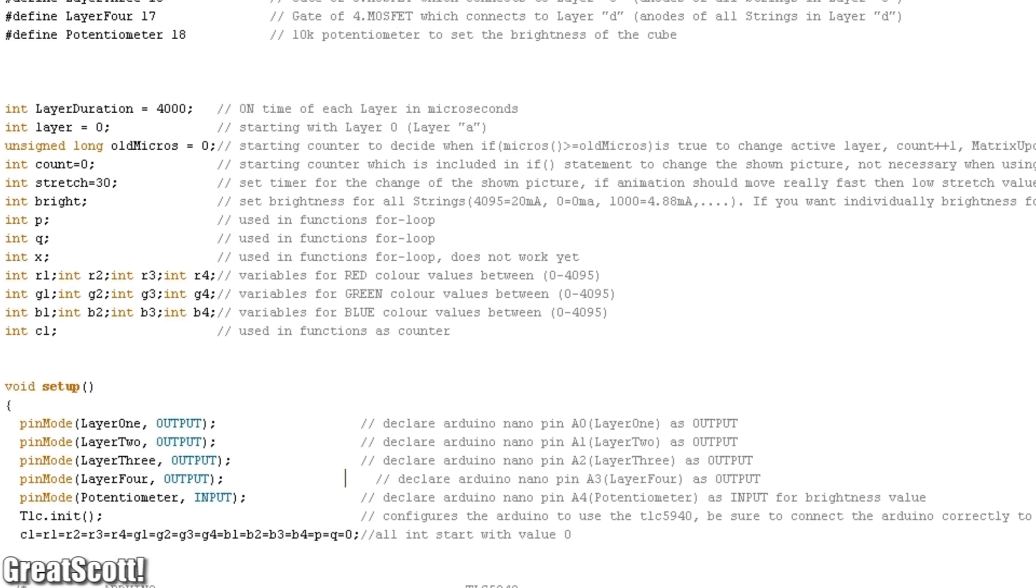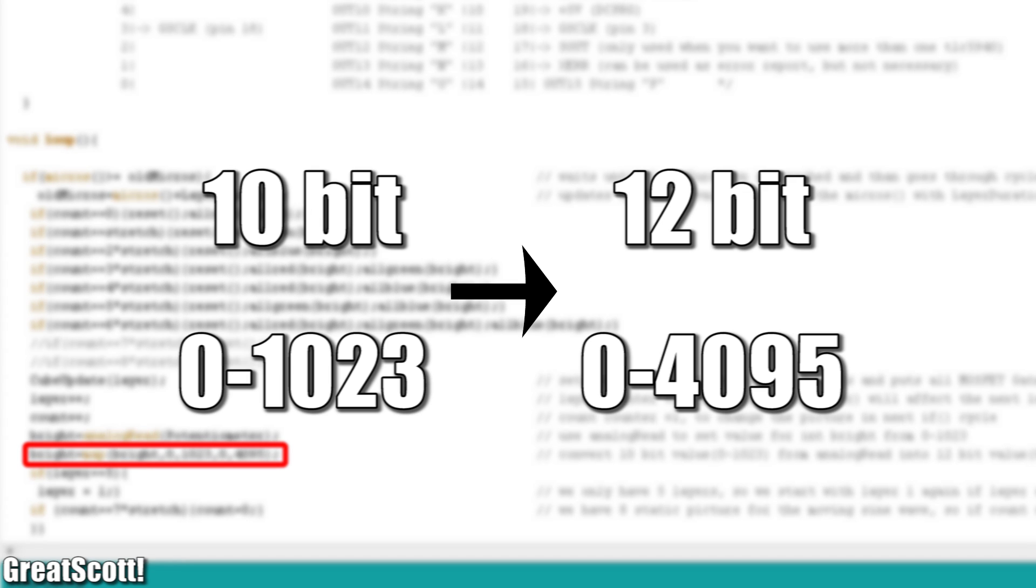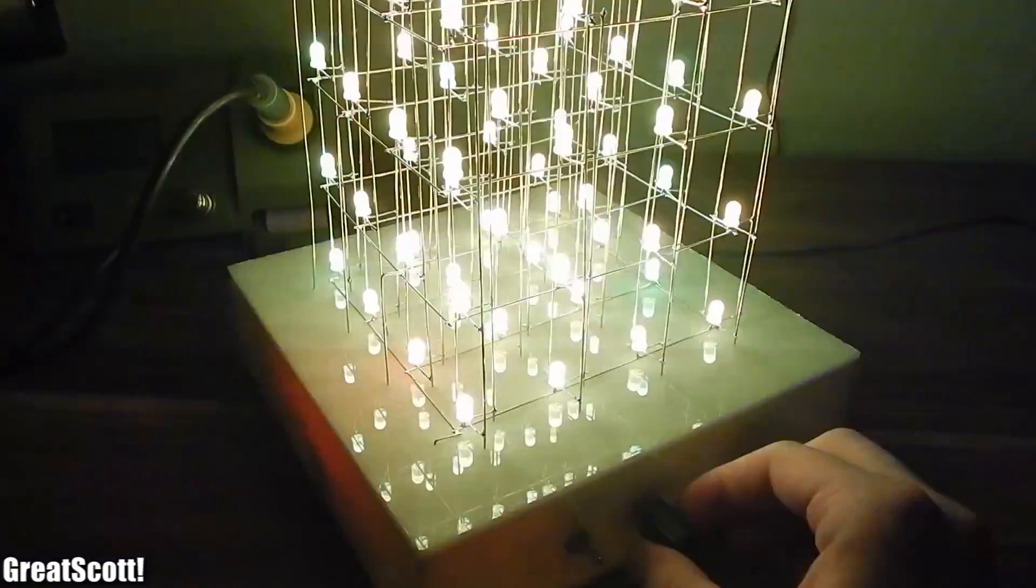It was pretty easy to adapt the code. All I needed was another integer, which I called bright, the analog read function and the map function to convert our 10 bit value of our analog read into a 12 bit value for the TLC. And as you can see it works really well.